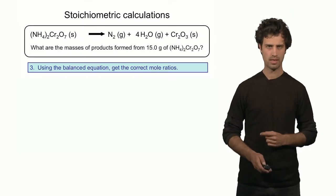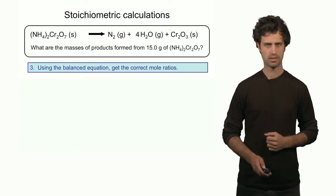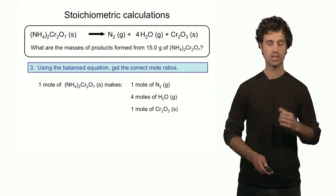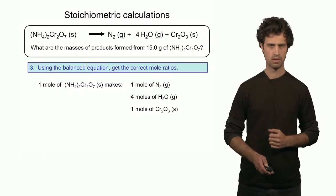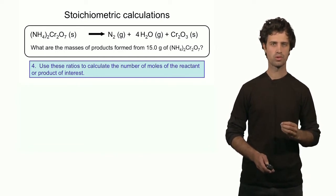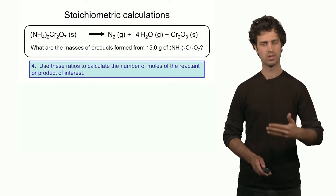The third step is to determine the mole ratios between the reactant and the products. For each one mole of reactant, looking at the chemical equation, I find one mole of nitrogen molecules, four moles of water molecules — that's the four in the chemical equation — and one mole of chromium oxide. From these numbers I can determine the mole ratios, and using these mole ratios I will convert the number of moles of the reactant into the number of moles of the products.